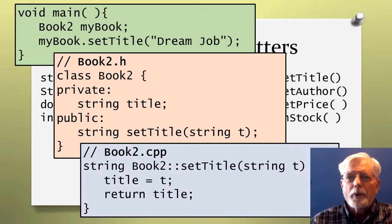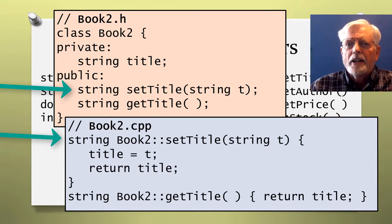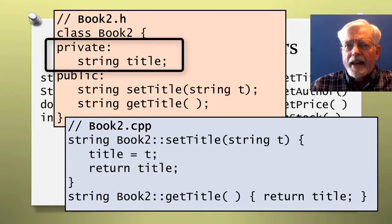One last piece of information is that the pound include quote Book2.h quote statement needs to be placed at the top of both the main program and Book2.cpp. The method SetTitle gives us the ability to place a string in the Book2 member data named title.